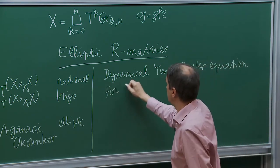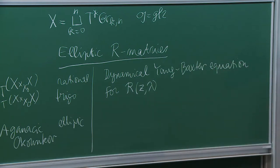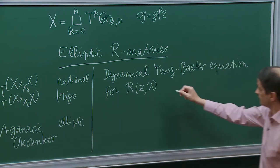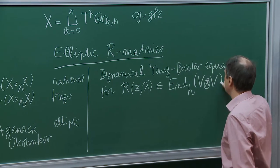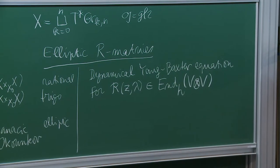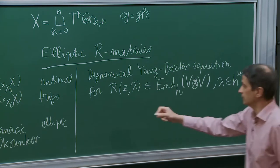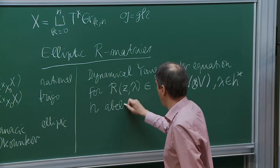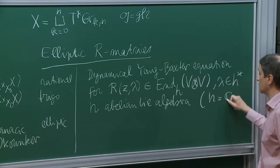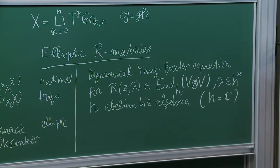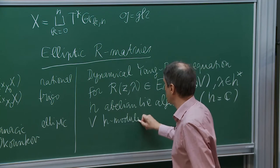The R-matrix depends on the spectral parameter and this dynamical parameter, which lives in the dual of the Cartan subalgebra. So R is in End(V ⊗ V), and lambda is in H*, where H is an abelian Lie algebra. In our case H is one-dimensional. V is some finite-dimensional H-module with a weight space decomposition.